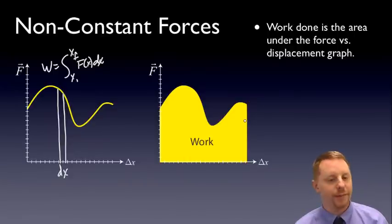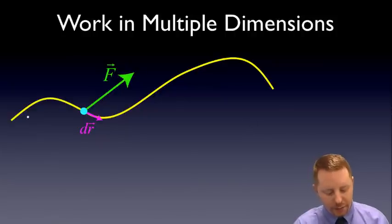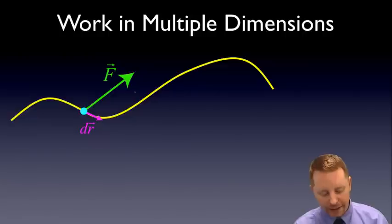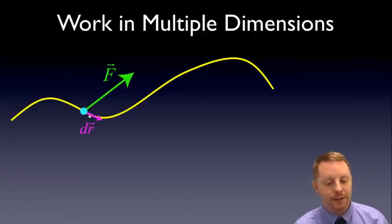But what about if it's in multiple dimensions instead of just one dimension? For example, here we have an object moving along a path where the force varies across the path. You can have a varying force, and as we do this, we have varying displacements, little bits of dr, and those can be in different directions as you move across the line.